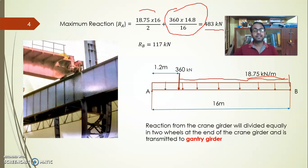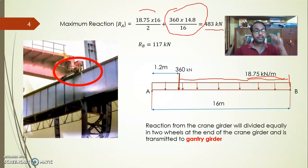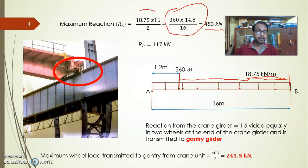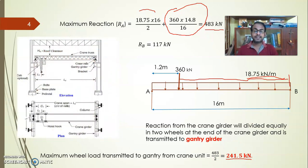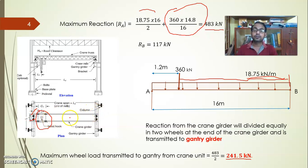The reaction from the crane girder is divided equally between the two wheels, acting as two equal point loads on the gantry girder. The load acting on the gantry girder from each wheel is 241.5 kN. The crab unit placed at the minimum approach distance on the crane girder transfers maximum reaction, which is then subdivided between the two wheels.